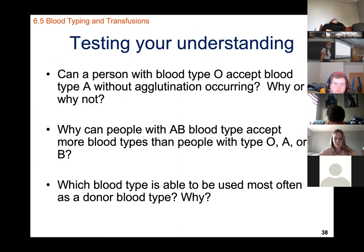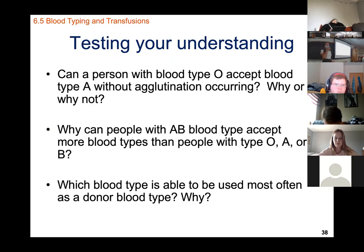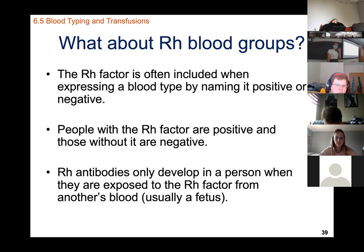Review questions: Can a person with blood type O accept type A blood without agglutination? No. Why can people with AB blood type accept more blood types than A, B, or O? Because AB is the universal receiver — they have no antibodies that would fight off donated blood. Which blood type is the most common donor type? Type O.